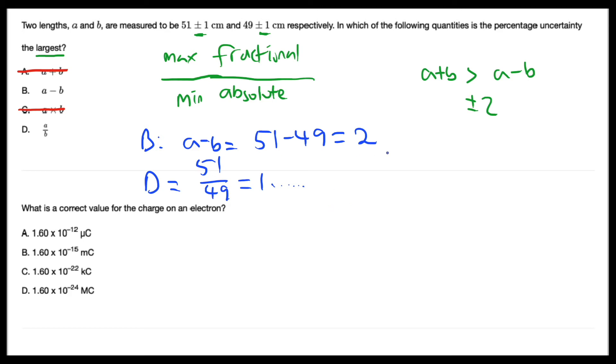And the fractional uncertainty for B is equal to 2. So the percentage uncertainty is going to be equal to 2 over 2, which is equal to 100%. And you know this must be the maximum value. So B is the correct answer.